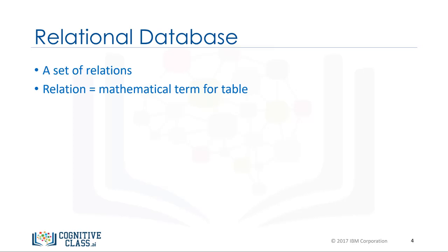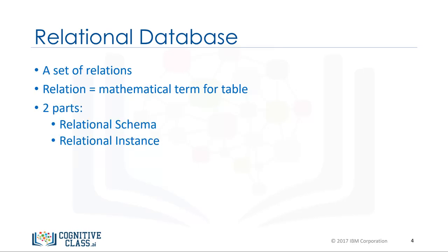A relation is also the mathematical term for a table. A table is a combination of rows and columns. A relation is made up of two parts: relational schema and relational instance.